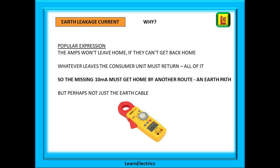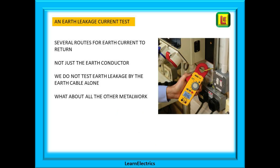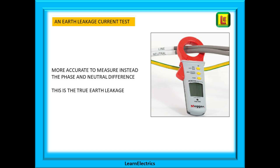What happens to this missing 10 milliamps? There is a saying: the amps won't leave home if they can't get back home. 5 amps out, we must get 5 amps back — what goes out must come back, all of it. So the missing 10 milliamps must have found an earth path back to the consumer unit. But the earth cable may not be the only earth path; there could be several routes for earth currents to return. So it makes sense not to test earth leakage just by the earth cable alone — we must consider other metalwork and other pathways.